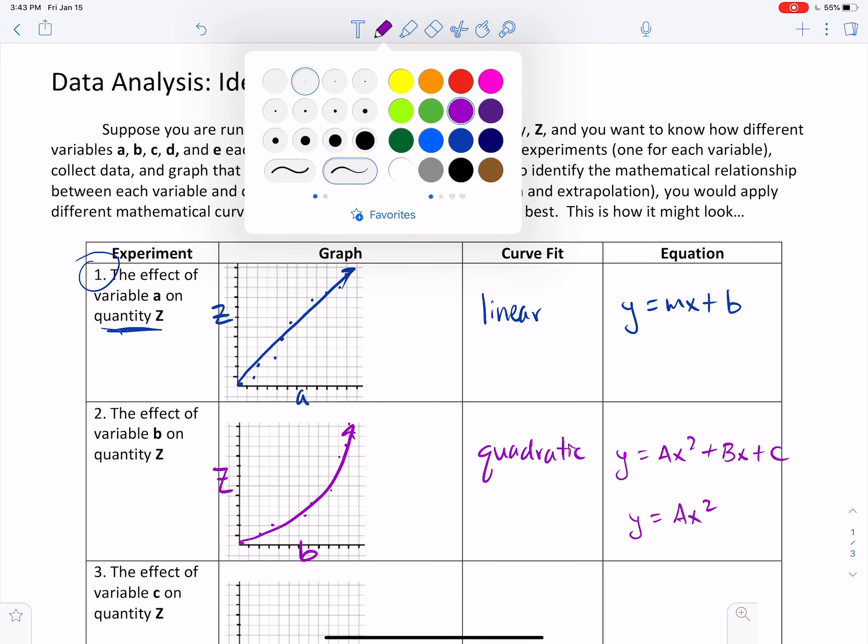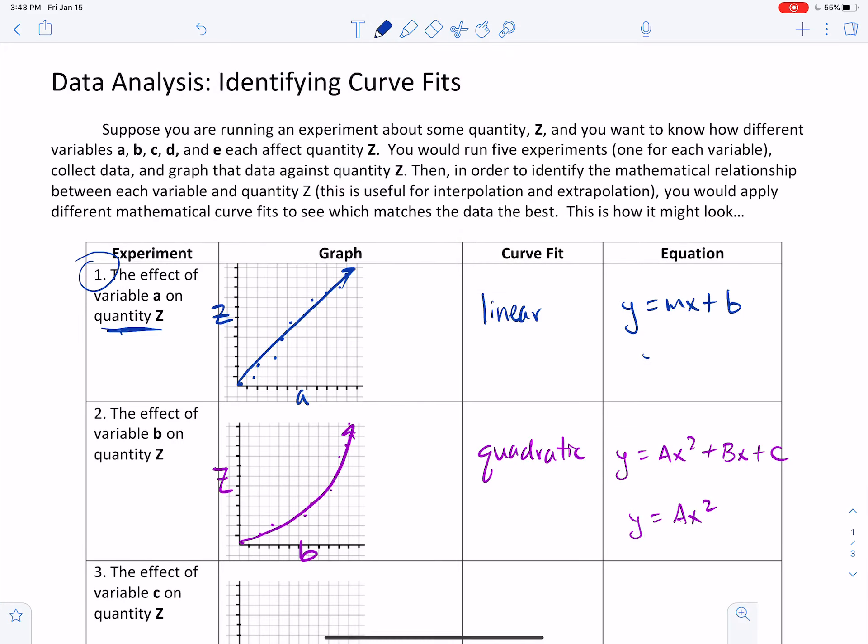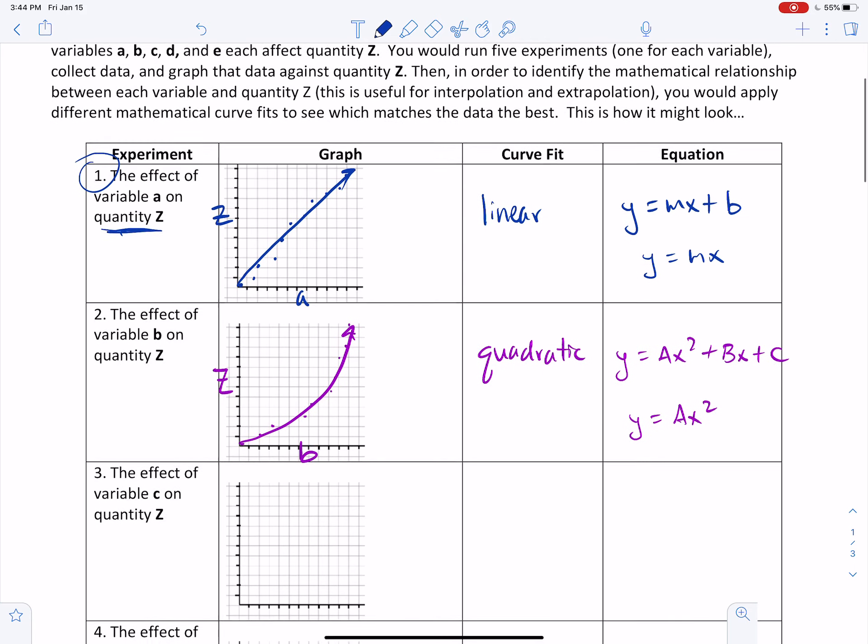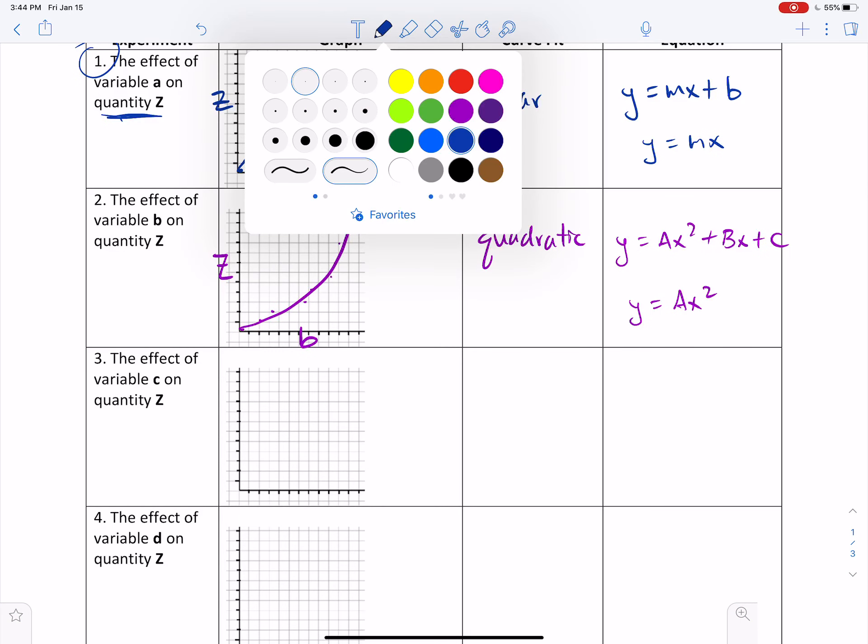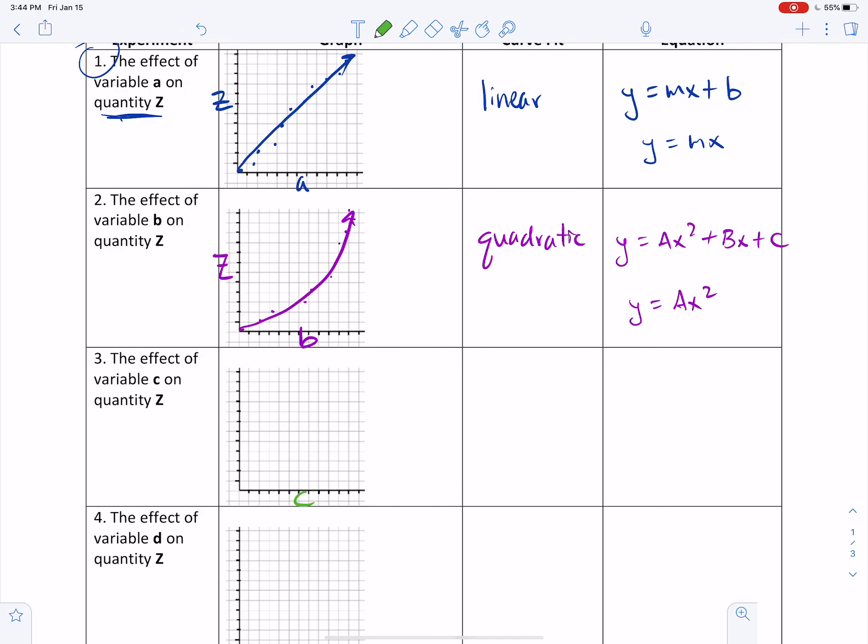In the same way, the linear equation could be simplified to just y equals mx, where m is the slope of that linear equation. So far we have a linear graph. Now we have a quadratic graph or a linear relationship and a quadratic relationship. Let's keep going. What if now you measured a new variable, variable C, against, again, this thing Z that you're measuring?